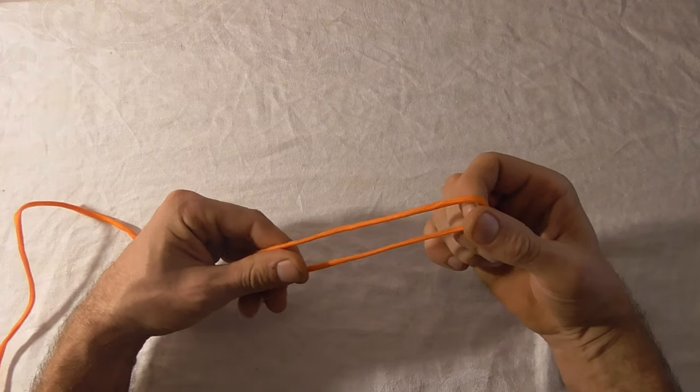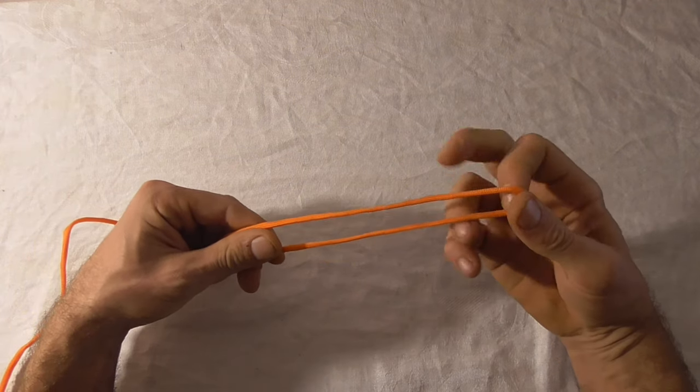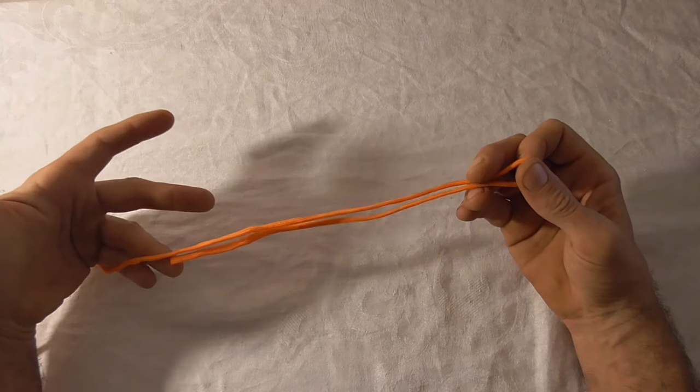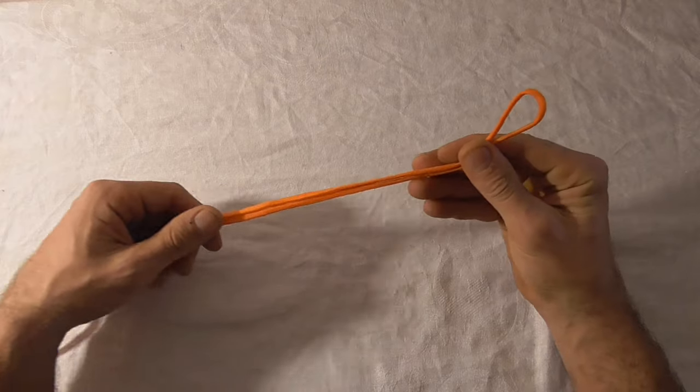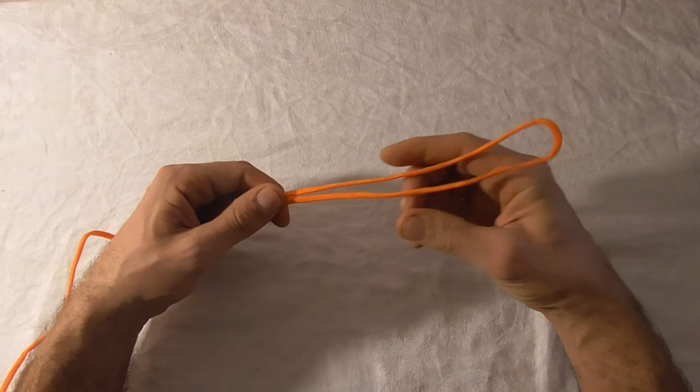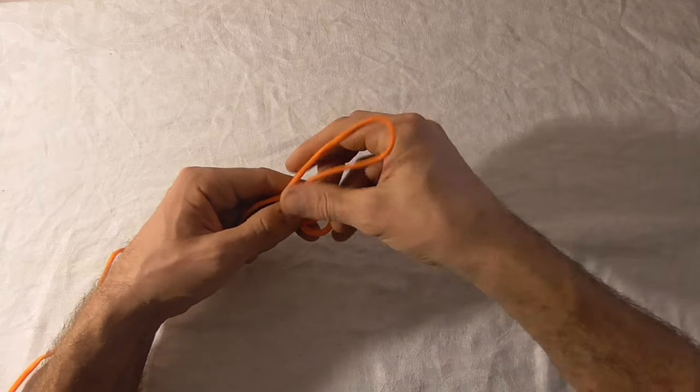To tie this knot, we'll put a bite in our line just like that, and then we'll use this as if it was one strand of line and put a loop, an overhand loop.